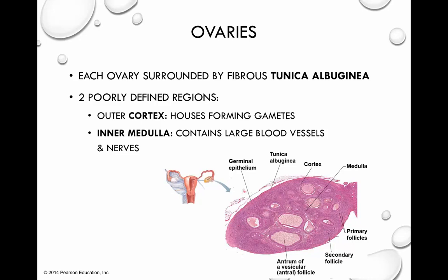Good morning. We're going to pick up where we left off on Monday, which was talking about the ovaries. The ovaries are the gonads of the female reproductive system, and the two primary roles of the gonads are to first produce the gamete — which for the female reproductive system would be the egg or the ovum — and second, to produce and secrete sex hormones.